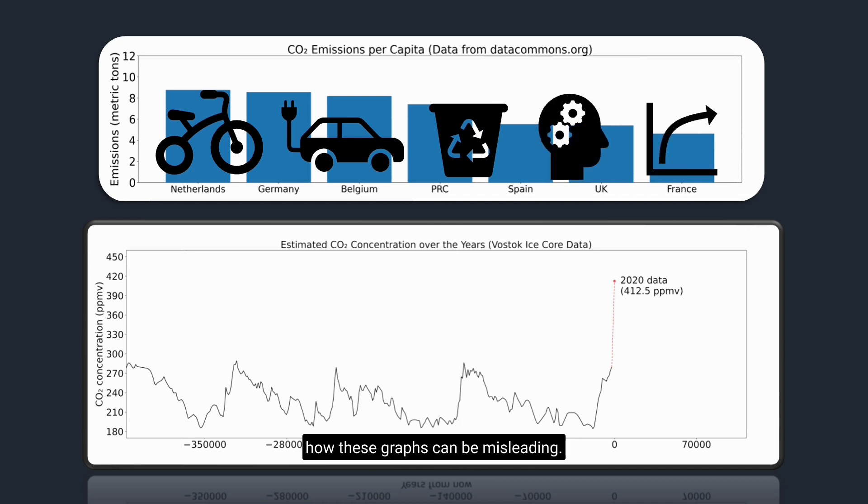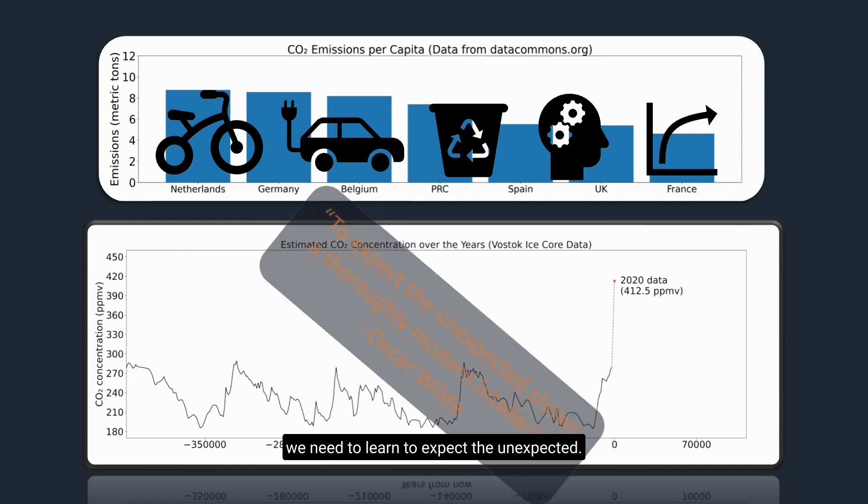We can also spread awareness about how these graphs can be misleading. Cyclical data can tempt us into thinking we are more certain about the future than we can be. In these modern times, in which humans play a critical role in climate change, we need to learn to expect the unexpected.